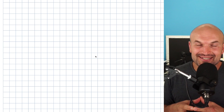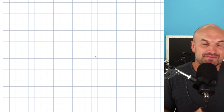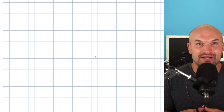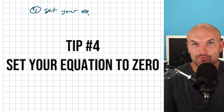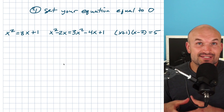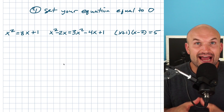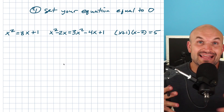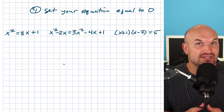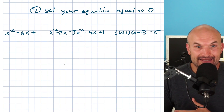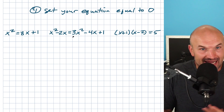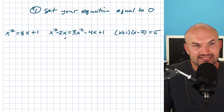We've made it to the last tip, and this is a huge one — probably the most important tip for solving quadratic equations, except for tip one when you only have one x. Make sure you get all the x's to the same side and get your quadratic equal to zero. Setting it equal to zero is critical: for factoring you need a product equal to zero to apply the zero product property; for the quadratic formula you need standard form AX squared plus BX plus C with everything on one side.